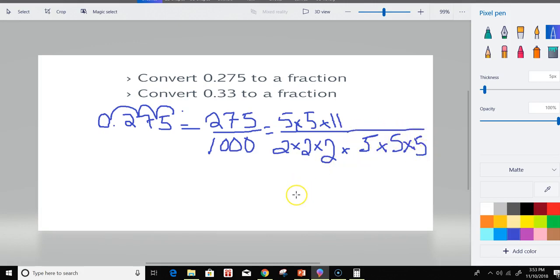And on the top, we could have 5 squared times 11. Now we get rid of some factors in order for us to simplify this fraction.